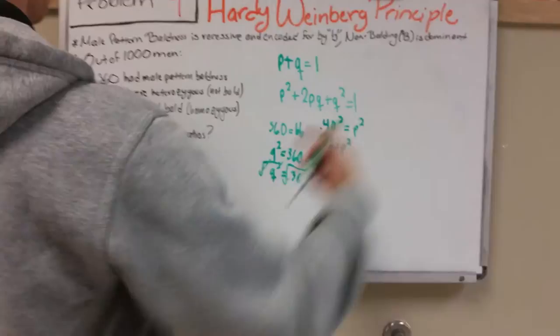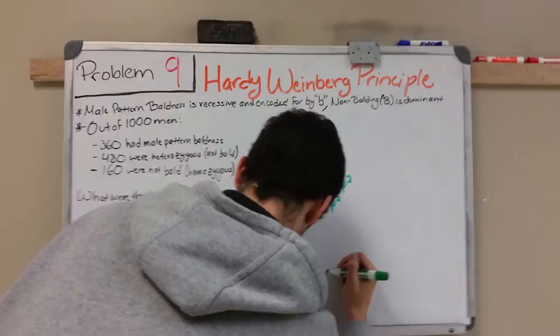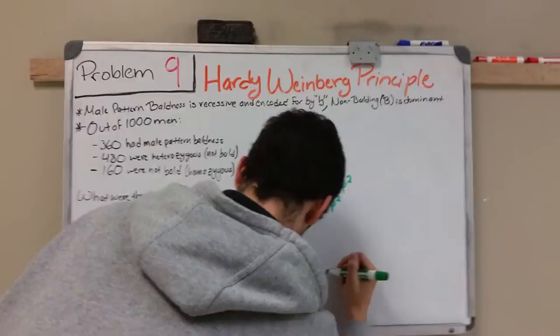And for the heterozygous we just plug in p and q. 2 times 0.40 times 0.16, and this gives us 0.48. After doing all that work, you have all your genotype frequencies.